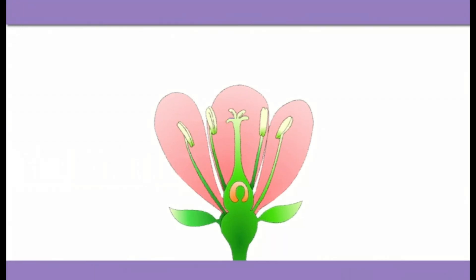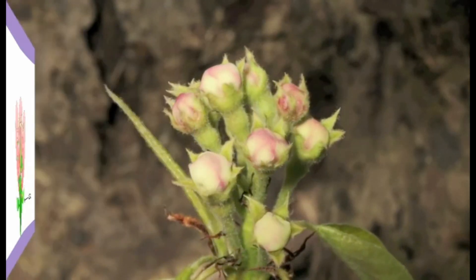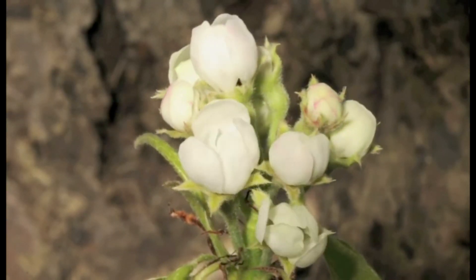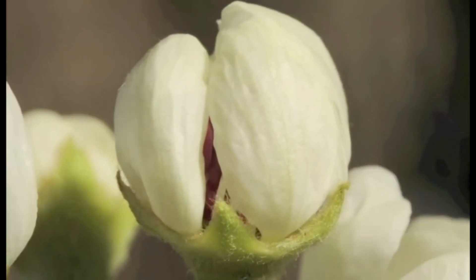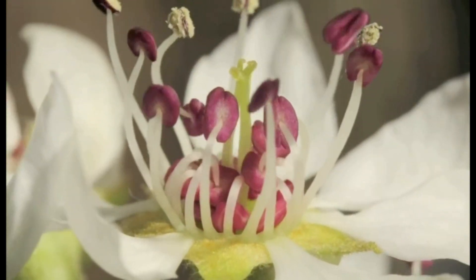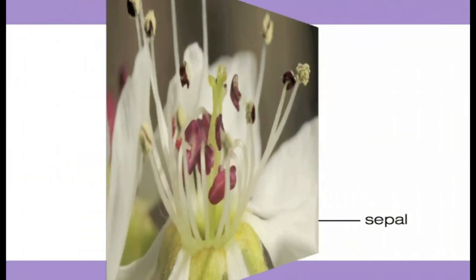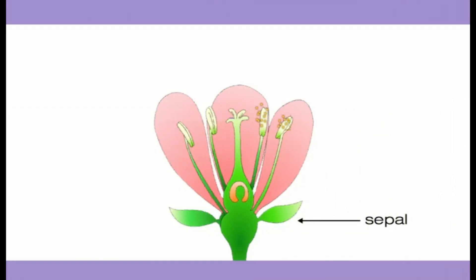The part that surrounds the flower as it grows is called the sepal. The sepal has two jobs: the first job is to protect the flower bud before it opens, and after the flower blooms, the sepal supports the flower. The colorful part of the flower that is most visible is the petal. All the petals together are called the corolla.